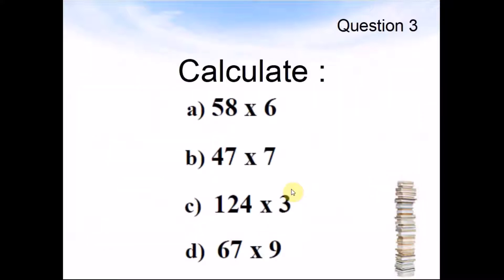Question 3. Calculate: A: 58 times 6 equals something. B: 47 times 7 equals something. C: 124 times 3 equals something. And D: 67 times 9 equals something. Pause the video and work out the answers.